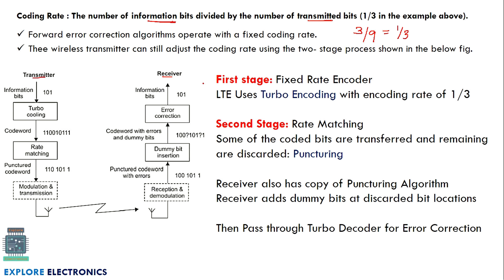This method has two stages. In stage 1 there is a fixed rate encoder. For LTE (4G), turbo encoding is used with an encoding rate of 1/3. In stage 2, the rate matching stage, some of the coded bits are transferred and remaining bits are discarded — this is called puncturing. In the block diagram, 101 is the information given to the encoder. The turbo encoder generates a codeword, and the rate matching unit punctures it by discarding two bits. This codeword is then transmitted by the modulator.